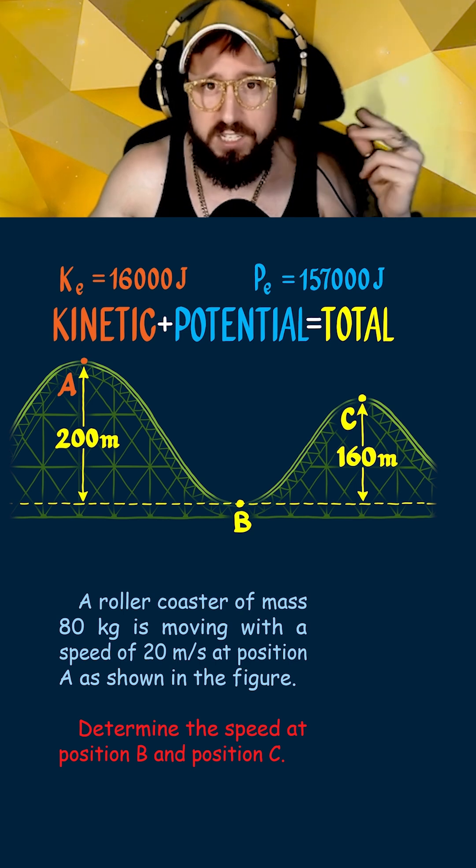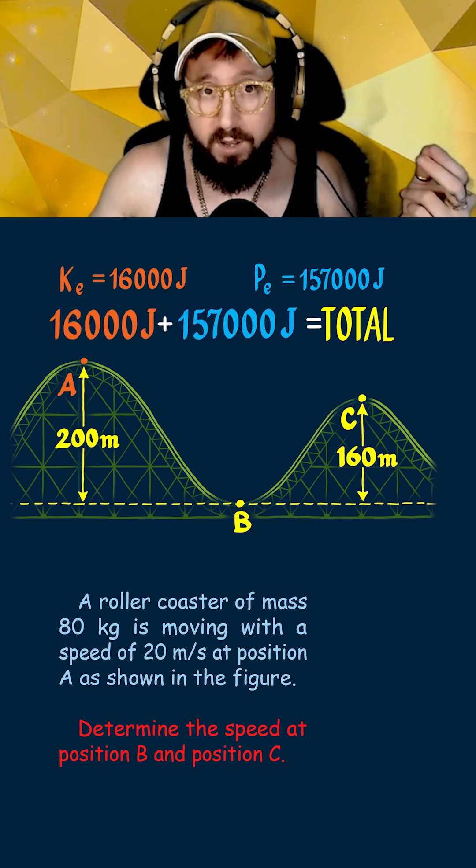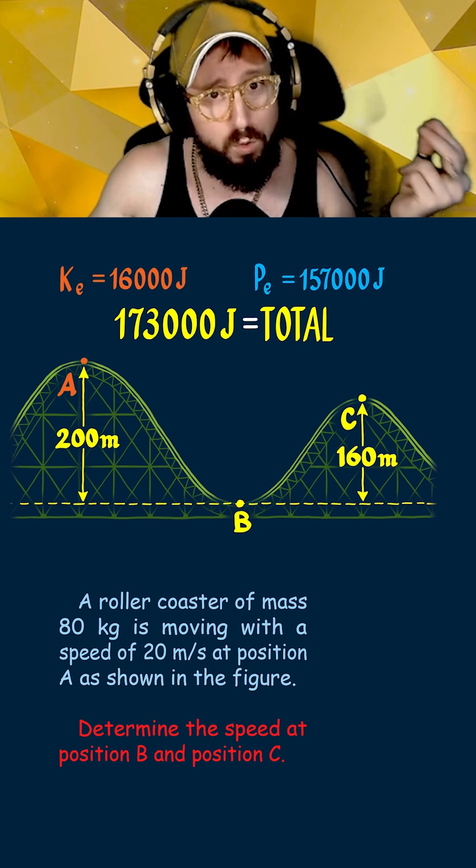So moving on, we now add the kinetic and potential energy together to get the total energy at point A, which is 173,000 joules.